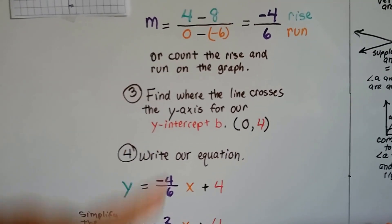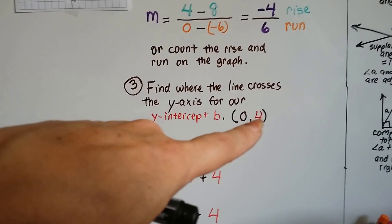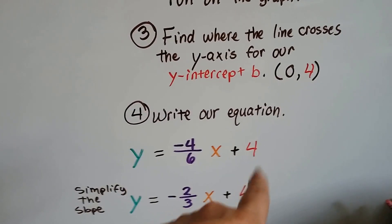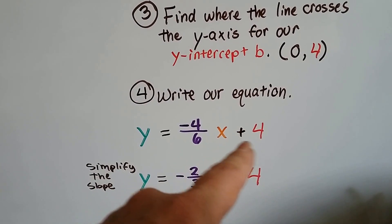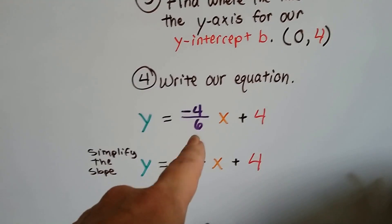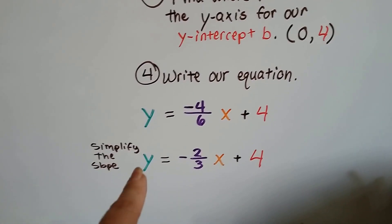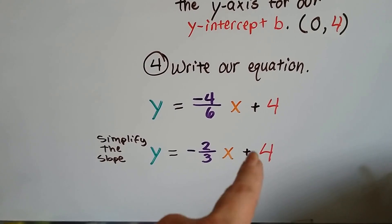Now we can write our equation. We've got our negative 4 over 6 for our slope. And we've got 4 for our intercept b. It's going to be the red guy back here. Now we write the equation y equals negative 4 over 6x plus 4. And we can simplify this to negative 2 thirds. So, our final equation is y equals negative 2 thirds x plus 4.